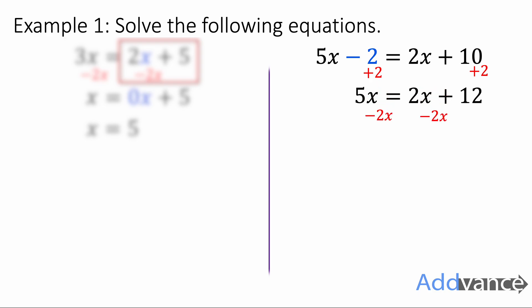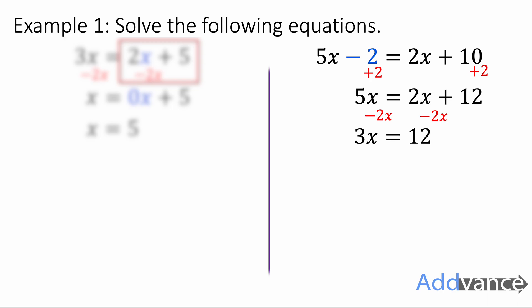Then we get rid of the plus 2x by subtracting 2x and we get 3x equals 12. The 2x and the minus 2x have cancelled. Finally, 3 times x is equal to 12, so we're going to do the opposite of times by 3 — divide by 3 — and we get x equals 4. That is the final answer.